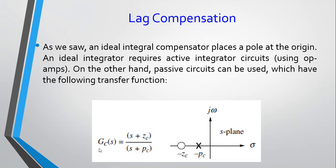You can see here, if you have this compensator before your plant — before, if you were using a PI controller, you would increase your system type by one, and your error constant would become infinity. In this case, when you put S to zero in the lag compensator, you get your ratio Zc over Pc. So in a way, you are increasing your error constant by a factor of Zc over Pc — that is what we're going to look at.